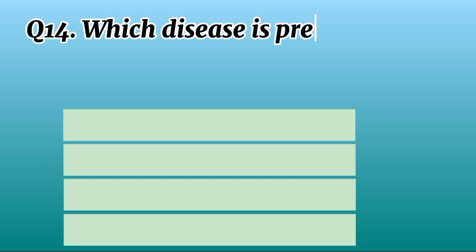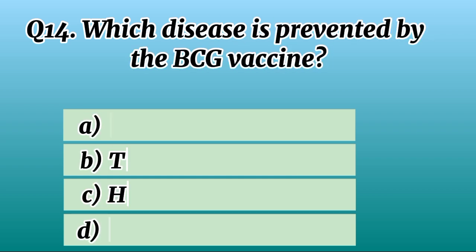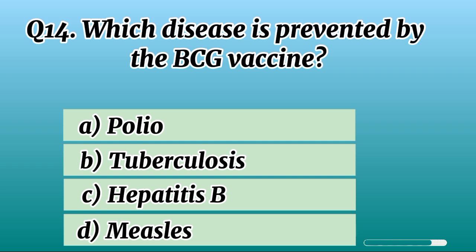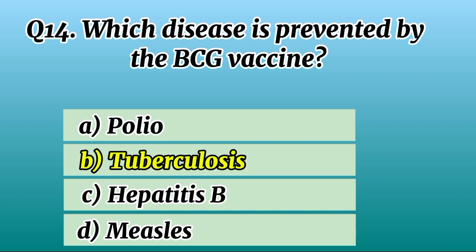Question 14. Which disease is prevented by the BCG vaccine? Correct option B: Tuberculosis.